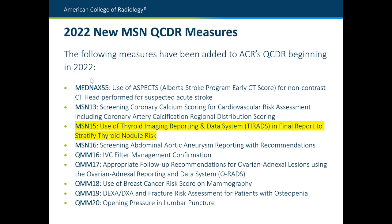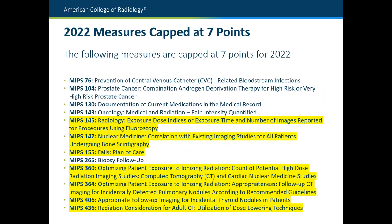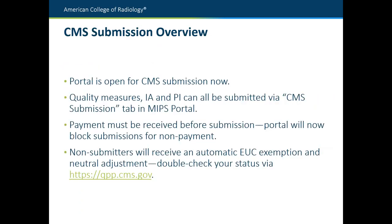Another question about the extreme and uncontrollable circumstances (EUC) policy: if anyone has submitted an application to be exempt from MIPS reporting due to an uncontrollable circumstance, you do not want to submit any data through our registry for the year or it will override your exemption. Please double check under your official QPP account — that's where you can see everything submitted for your TIN or NPI. If you see quality measures or IAs have been submitted, that is going to override your exemption.